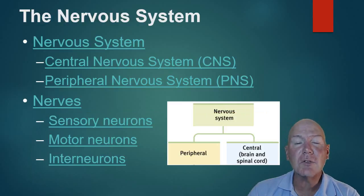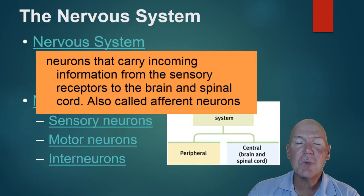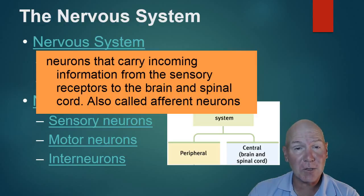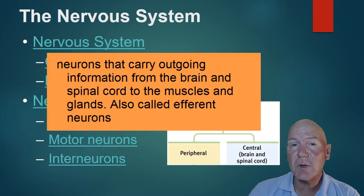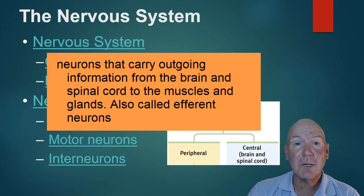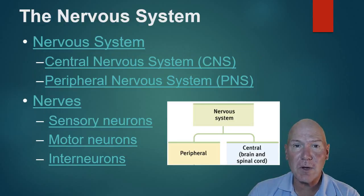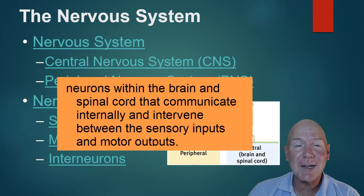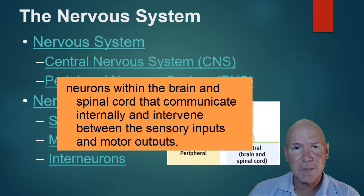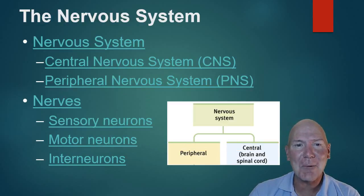Sensory neurons always run from your body to your brain, picking up senses and carrying that information as electrical impulses called action potentials. Your brain sorts out what senses you're experiencing. Motor neurons always run away from the brain — if you initiate movement of your arm, you send a message from your brain down the motor neurons. Interneurons reside in your spinal cord, and it's about the only time your brain doesn't control everything — when an interneuron takes effect during a reflex.